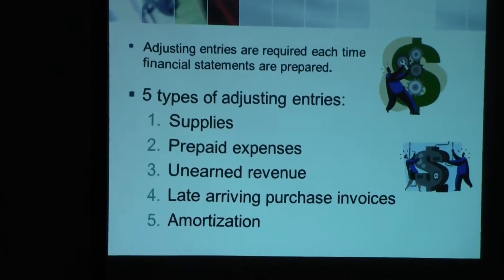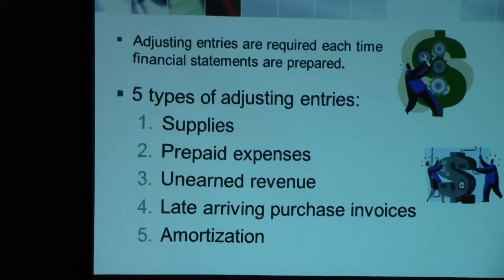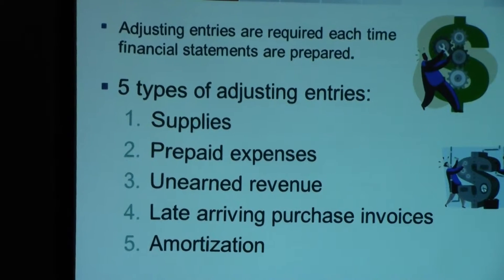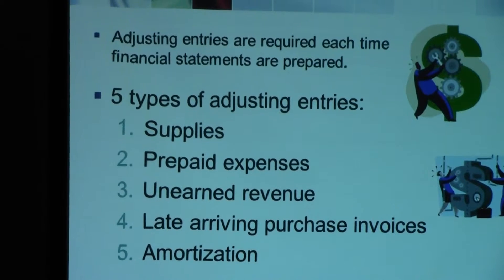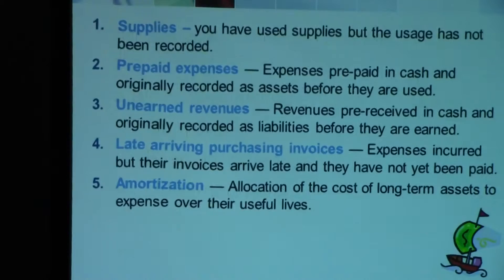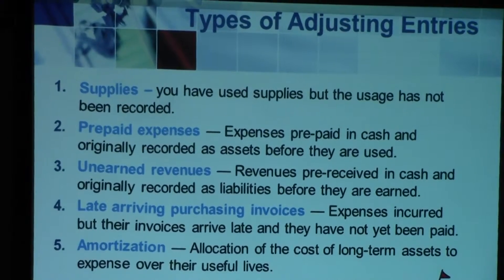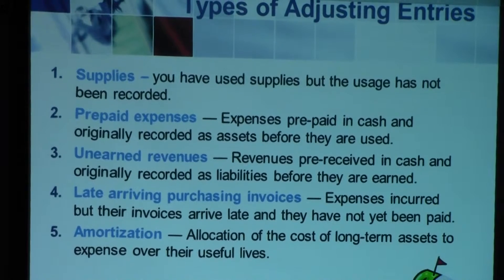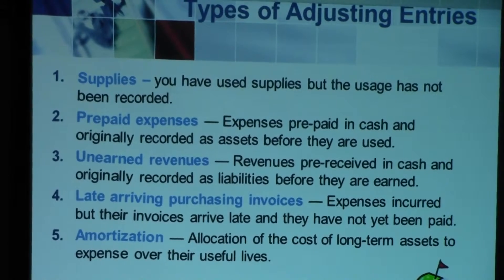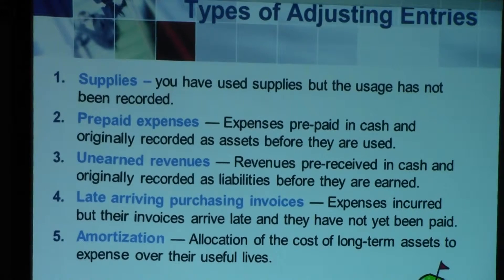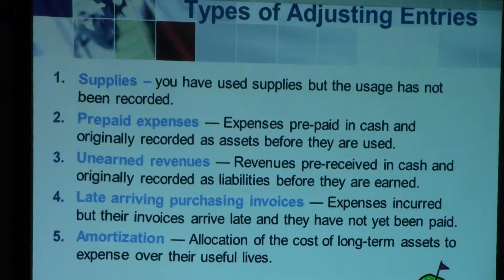The five types are: supplies, prepaid expenses, unearned revenue, late arriving invoices, and amortization. Moving on to the next slide, we talked about why you would have these adjusting entries to begin with. It's clear that you need these adjusting entries at the end of the fiscal period to make sure that the accounts are properly reflecting the amounts in those accounts.